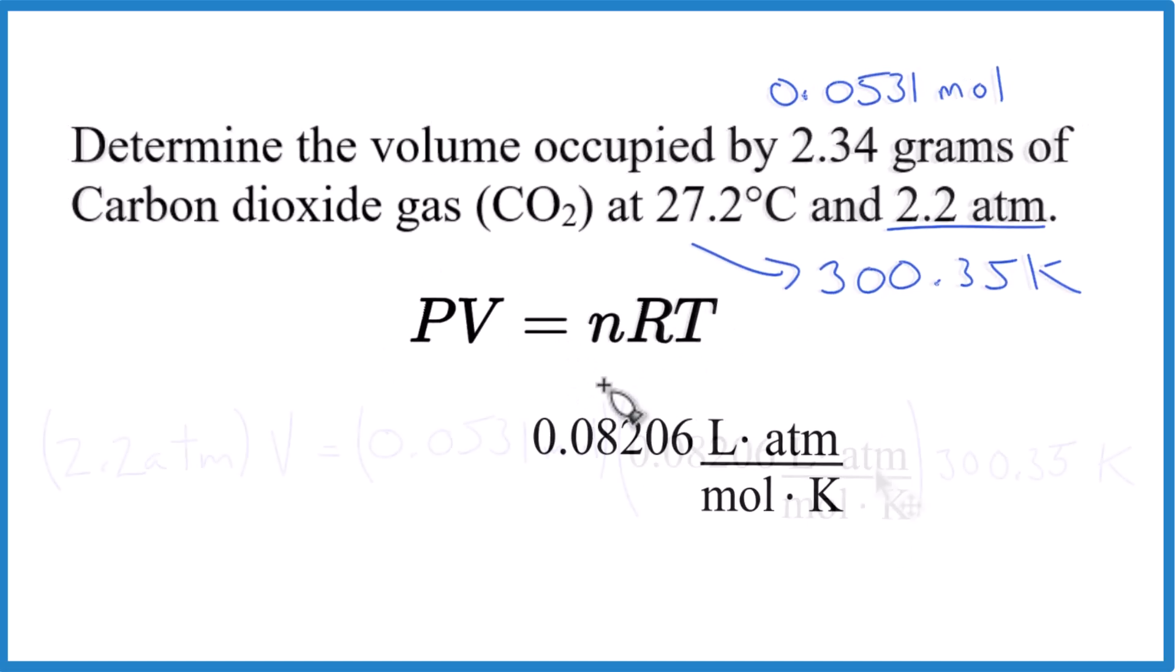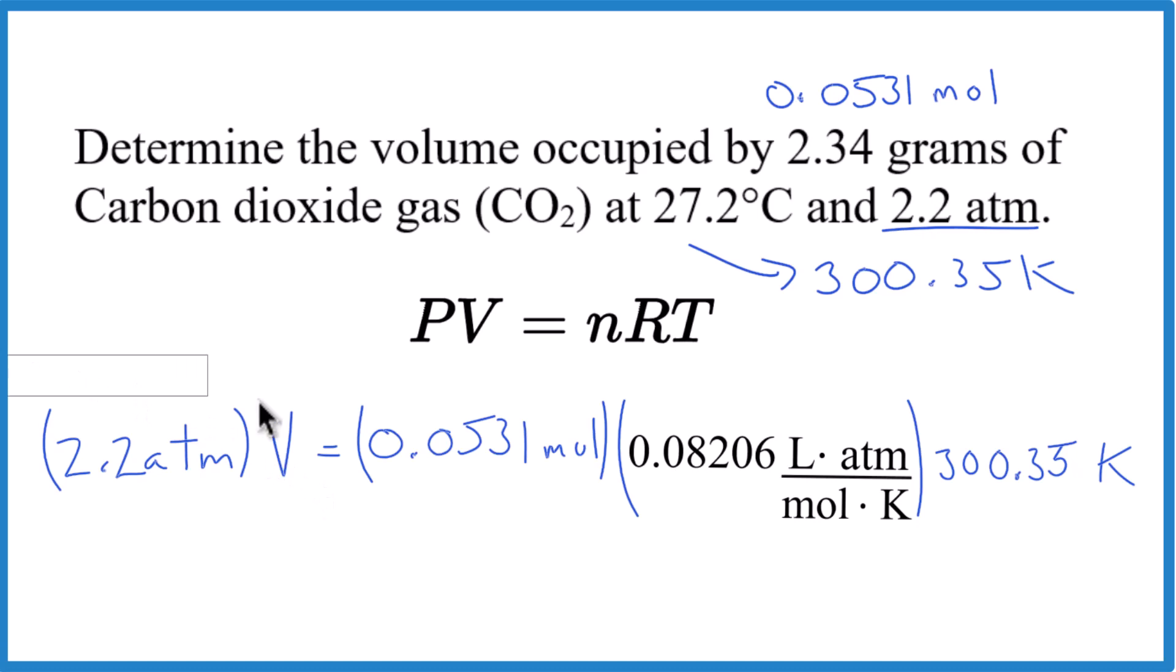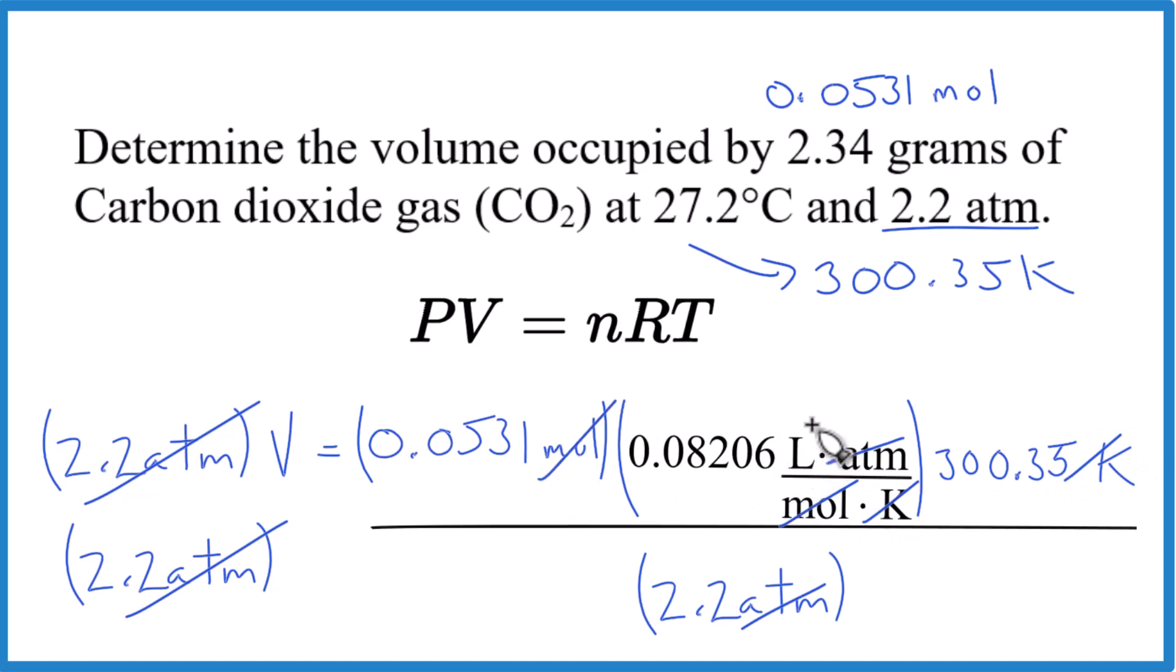To get volume by itself, I'm going to divide both sides by the 2.2 atmospheres. That gets rid of it over here. Atmospheres, Kelvin, and moles cancel, we're left with liters. We know we did it right. We end up with volume equals 0.594 liters.